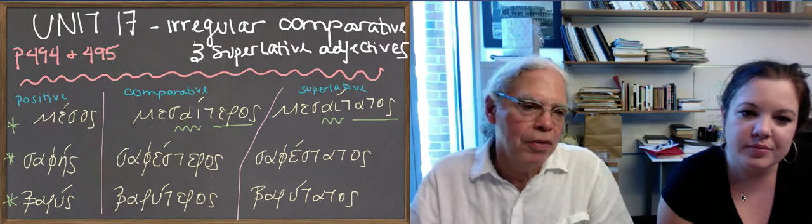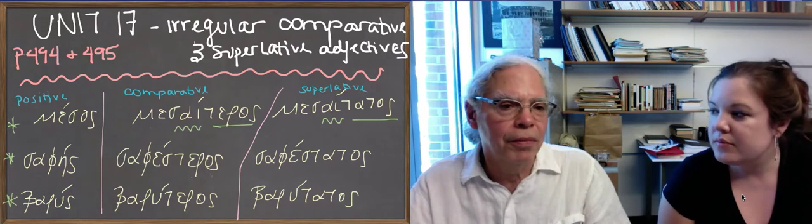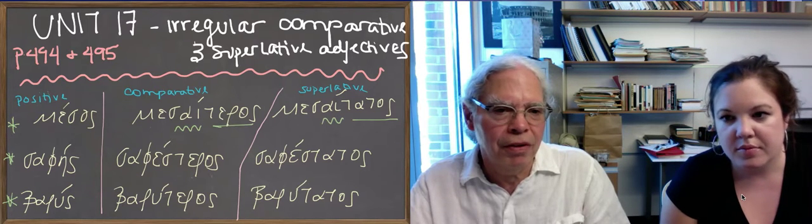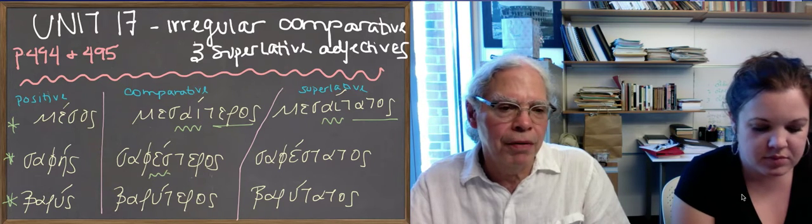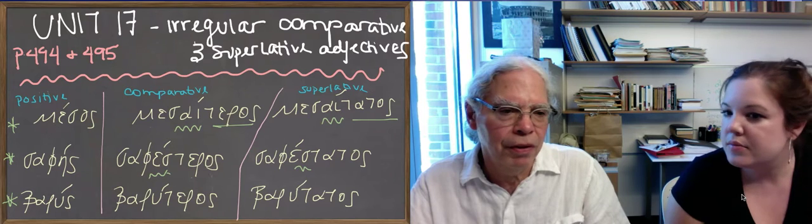In the case of safes, safes is an s-stem adjective like alethes. So you would expect the stem to be safes and then you just stick on teros. So that's a third declension adjective with pretty predictable behavior, no linking vowel at all between the stem and the suffixes.